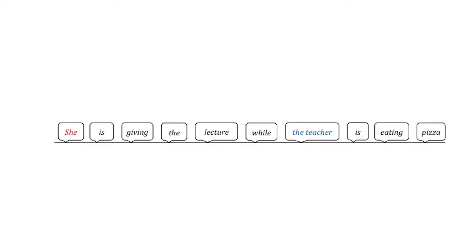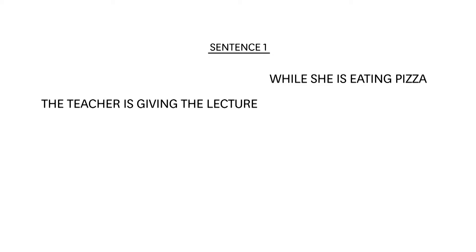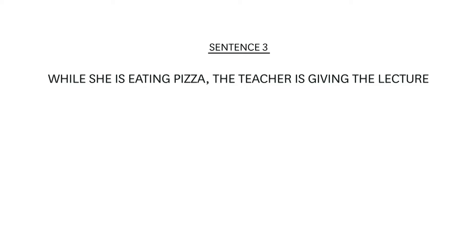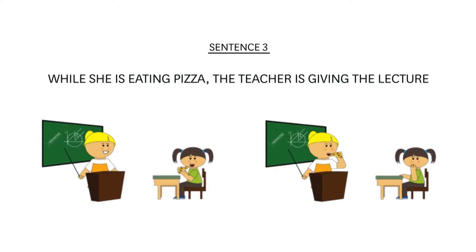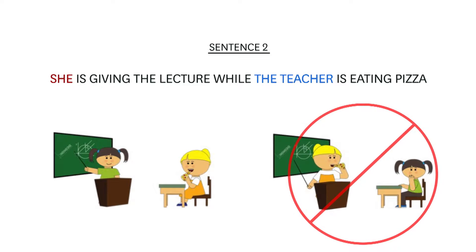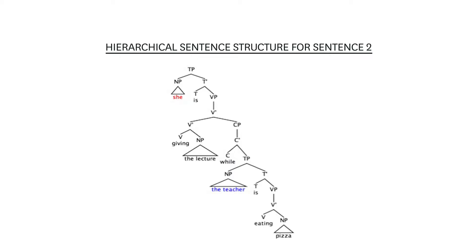This explanation will not work, however. If we reposition the entire clause containing 'she' to the front of the sentence — giving 'While she is eating pizza, the teacher is giving the lecture' — the sentence is ambiguous again. Although the pronoun 'she' comes first, it can refer either to the female student or to the teacher. Therefore the constraint cannot be explained by a linear strategy; it is enforced by a linguistic principle based on sentence structure.